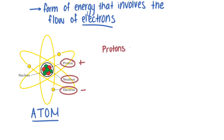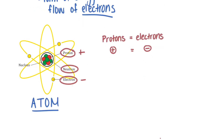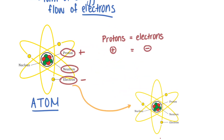Usually the number of protons is equal to the number of electrons, so the positive charges and the negative charges balance out. But sometimes when there's an outside force, the balance is destroyed and the atom might lose or gain electrons. When atoms lose electrons, the electrons can start jumping to another atom, and this free movement of electrons is what causes an electric current.